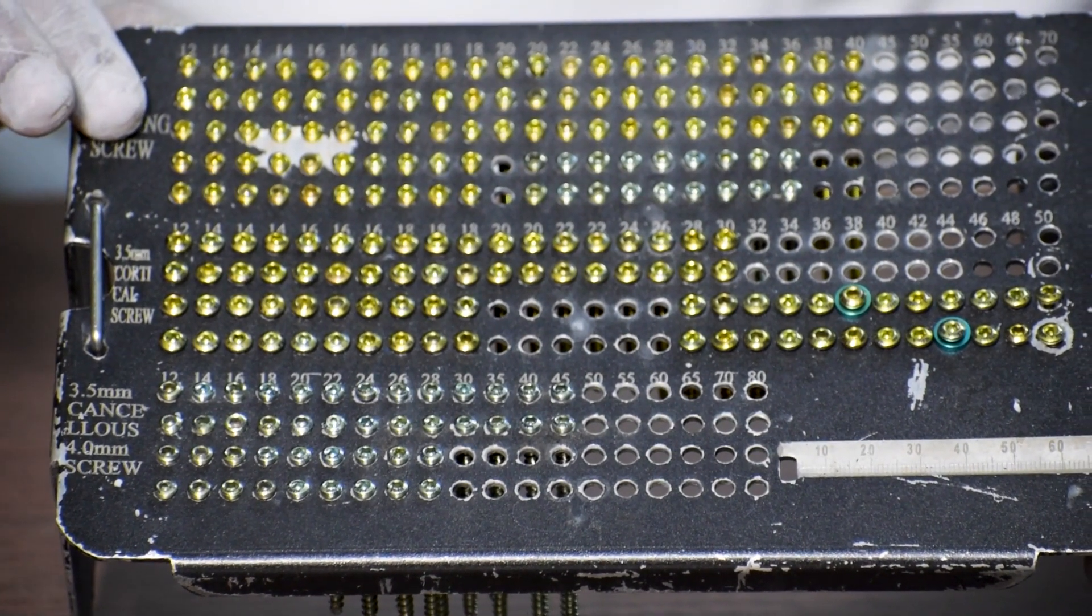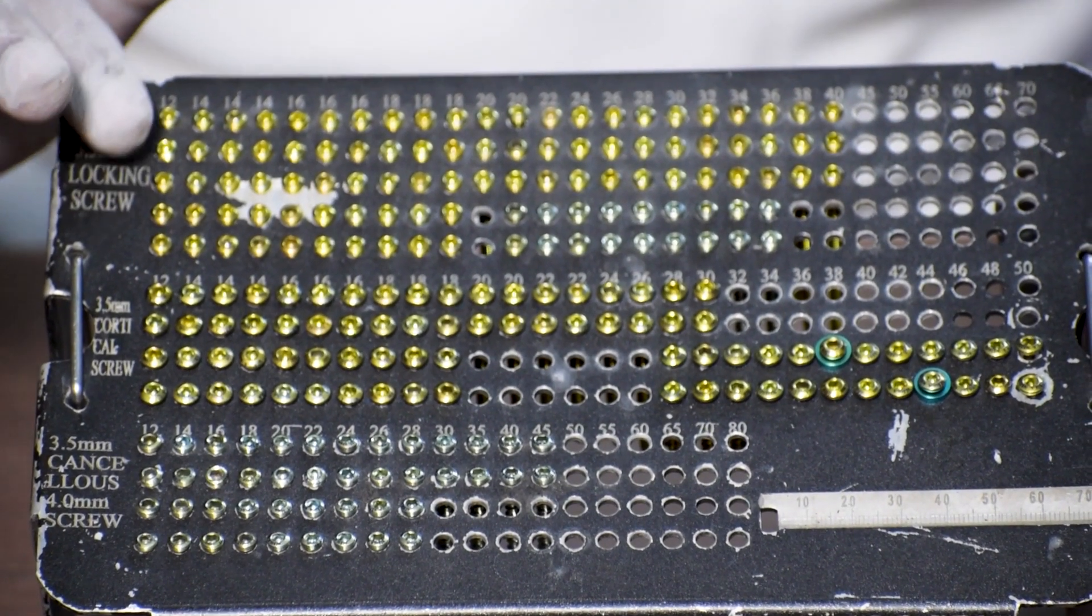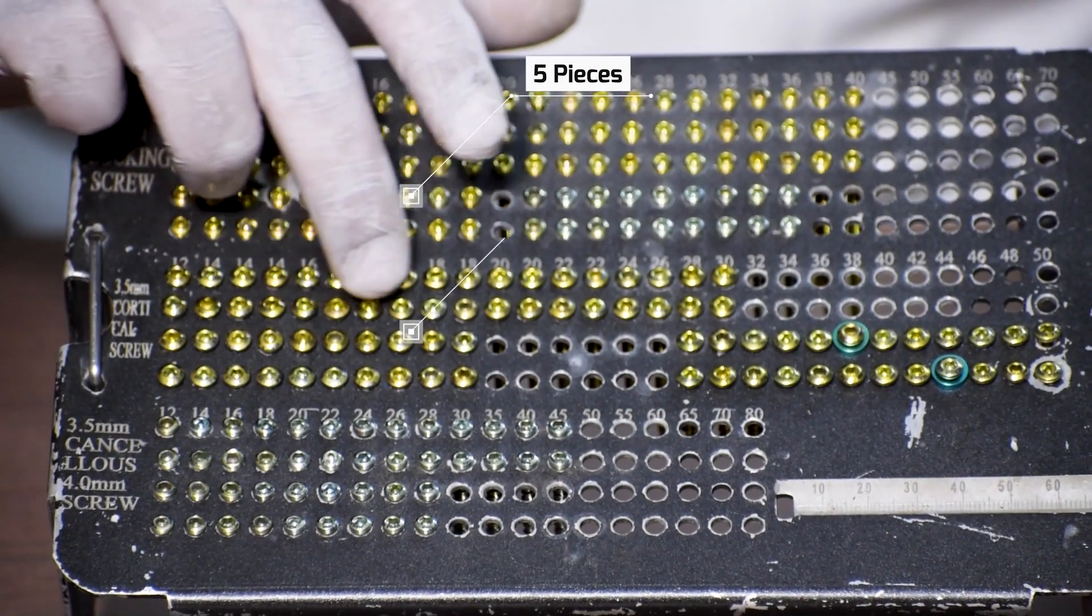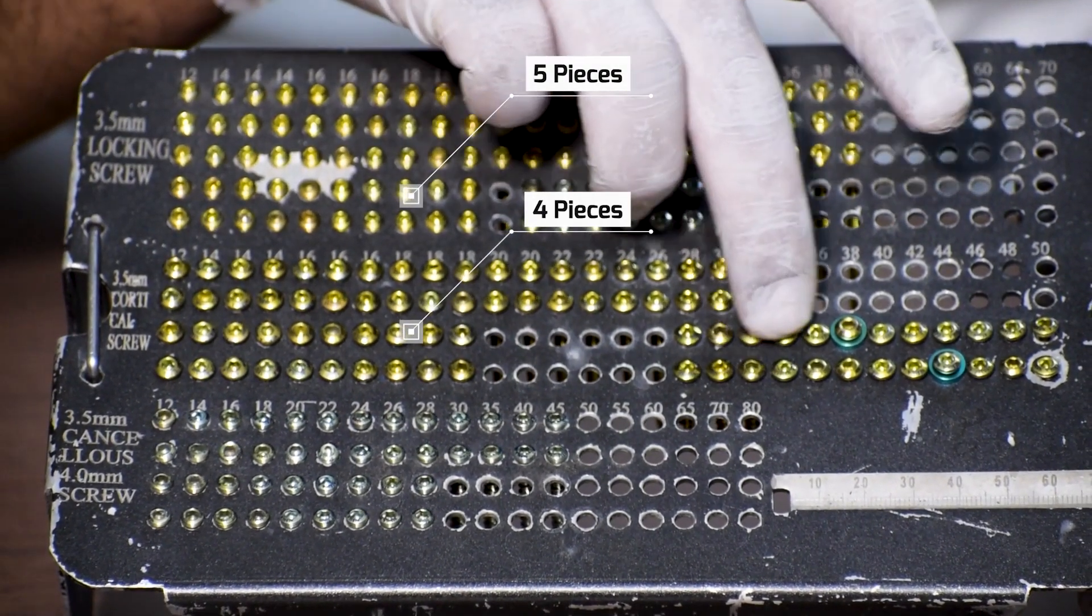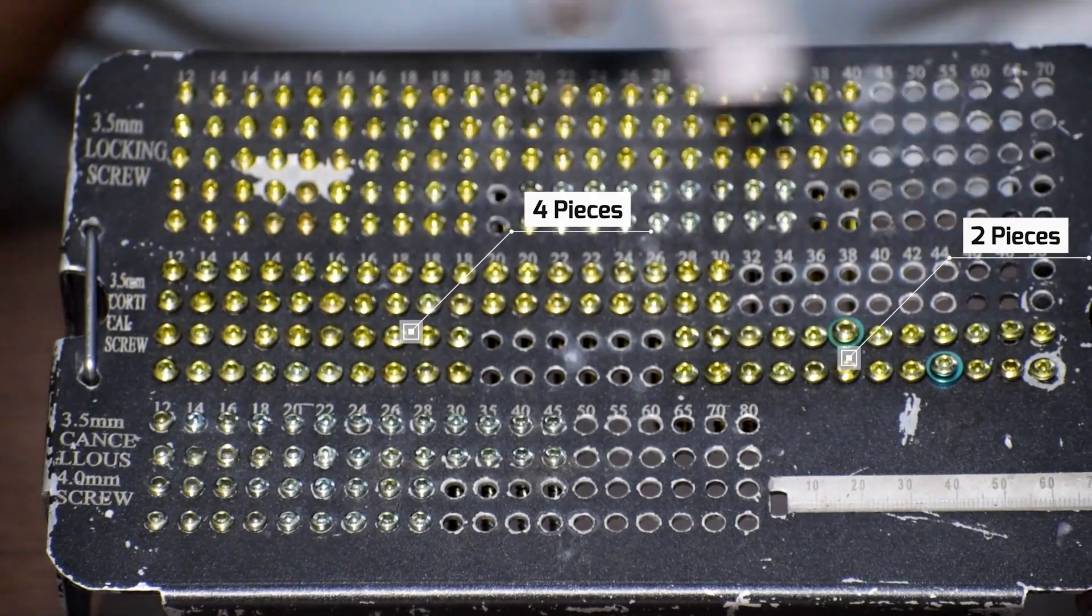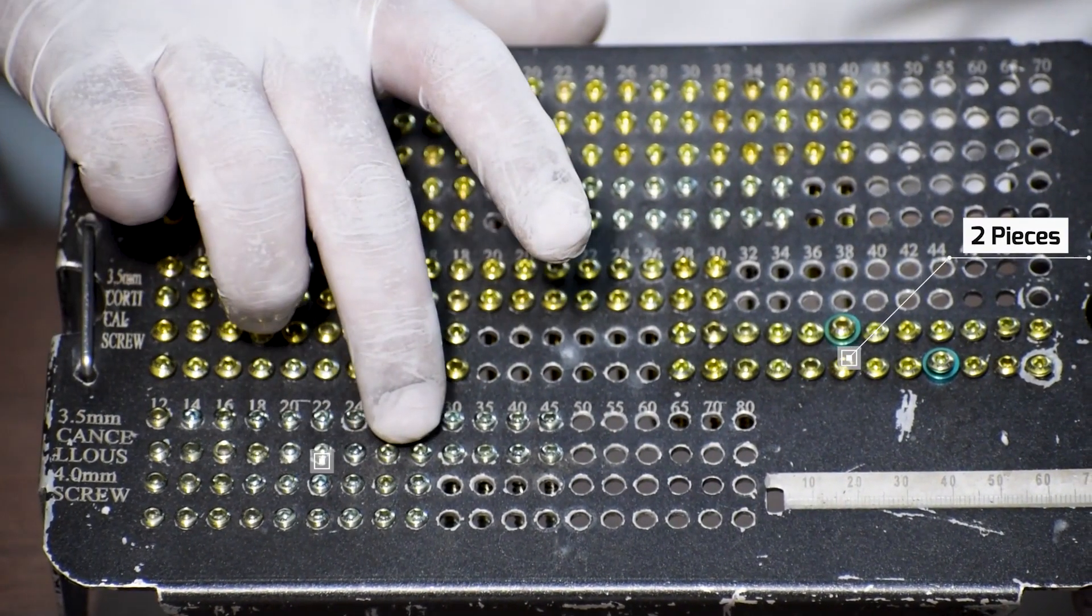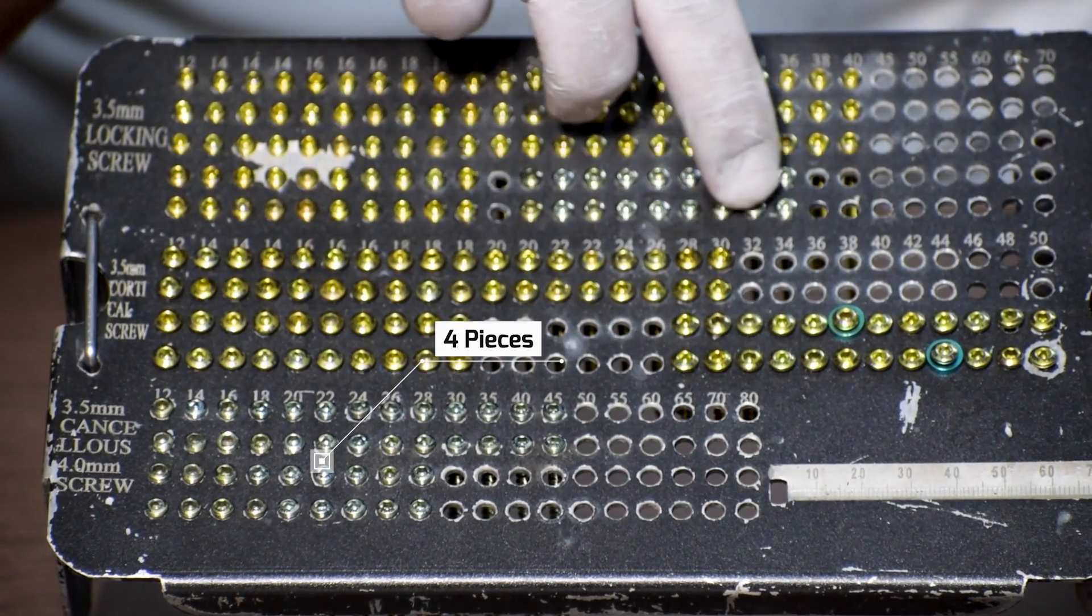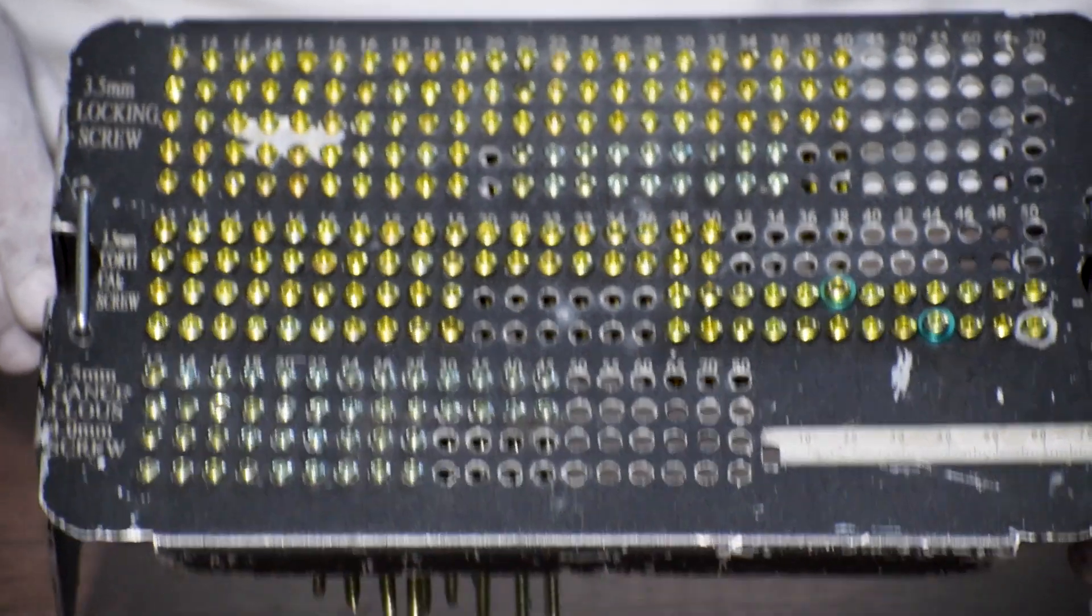As per quantity, generally, 5 pieces of locking cortical screws, 4 pieces of cortical screws, 2 pieces of cancellous full-thread screws, 4 pieces of locking cancellous screws. Here as you can see there are 2 of each sides provided and the rest of the 2 is provided here.